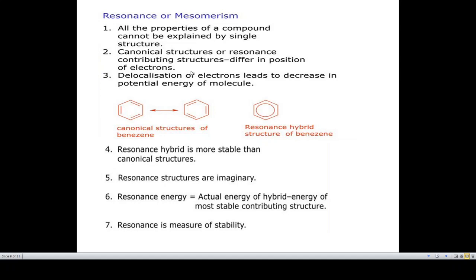The characteristic features of resonance are: all properties of a compound cannot be explained by a single structure; canonical or resonating structures differ only in the position of electrons; pi electrons undergo delocalization, decreasing the potential energy of the molecule; the hybrid of canonical structures is more stable than any individual structure; resonance structures are imaginary; and resonance energy equals the actual energy of the hybrid minus the energy of the most stable contributing structure. Resonance is a measure of stability.